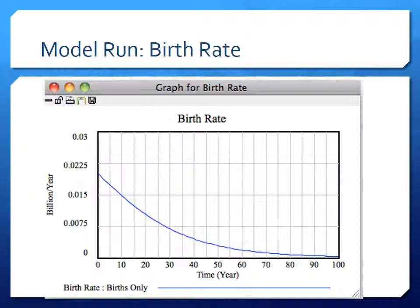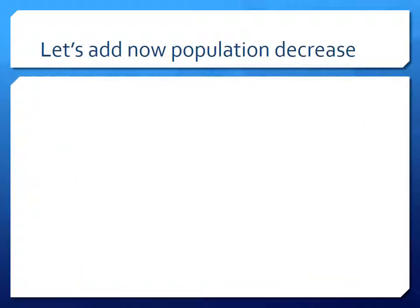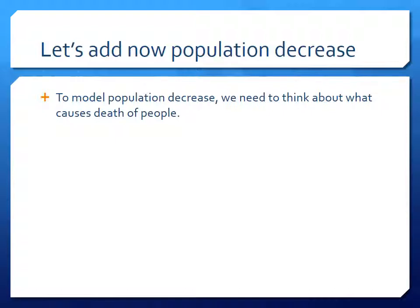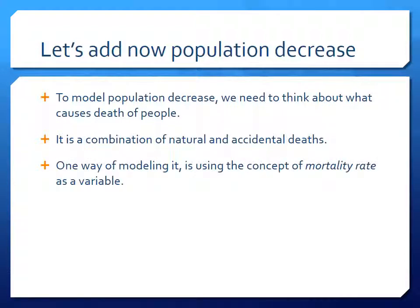This model is fairly simple — it only has births, so no one is dying. That's an unrealistic assumption, so we're going to build more complexity by adding population decrease through deaths. To model deaths, we think about what causes people to die: natural deaths, accidental deaths happening at different life stages. One way to model this is using the concept of mortality rate as a variable, where the number of deaths per year equals population multiplied by the mortality rate.